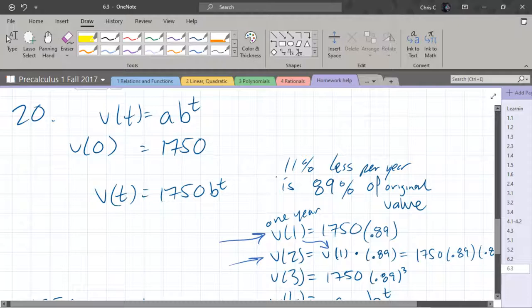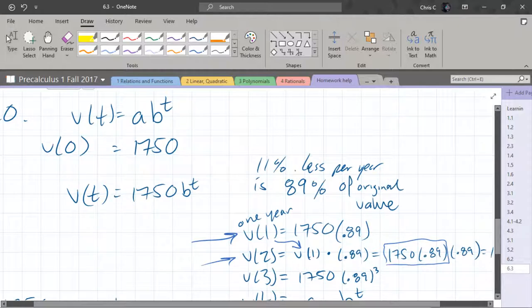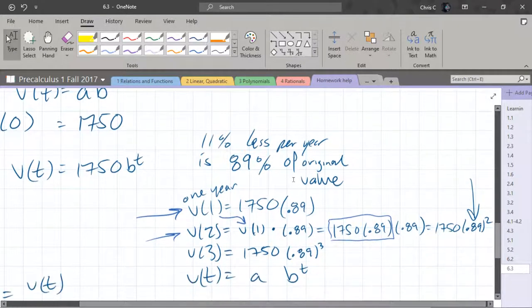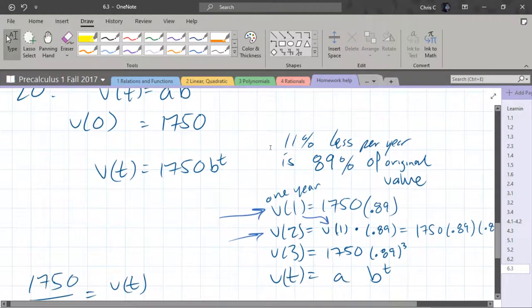Which you could have written, this is V1 right here times 0.89 right here. And then of course that's 0.89 squared. And if you notice this pattern, you could pretty easily figure out V3 will be 0.89 times 0.89 times 0.89 or 0.89 cubed right there.